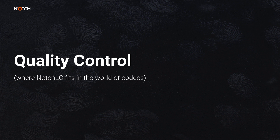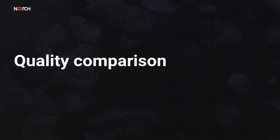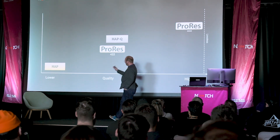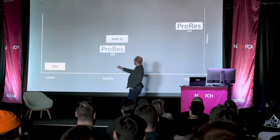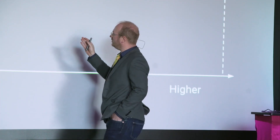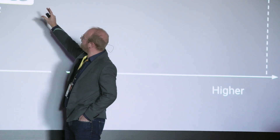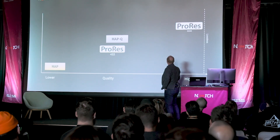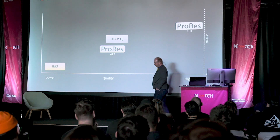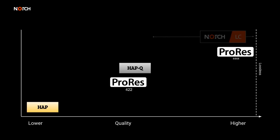So how does NotchLC fit in quality-wise with other codecs? Taking a small sampling: at the lower end of the GPU codec space we have HAP or DXV. HAP-Q gave us a nice bump in what could be achieved with a GPU codec. ProRes 422 sits around the HAP-Q quality range, with exceptions like chroma gradients. At the top end we have ProRes 4444, and we wanted to land up there — because that was the gap that people had.